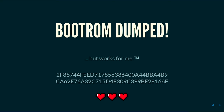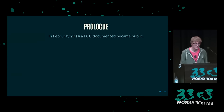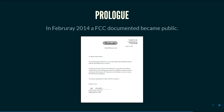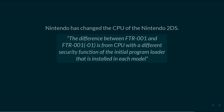Wir haben also den Bootrom — Nintendo verliert hier wieder ein Leben. Bevor wir uns den Bootrom nochmal ansehen, habe ich noch einen kleinen Prolog. In 2014 wurde ein FCC-Dokument öffentlich, das quasi sagt, dass Nintendo die CPU im Nintendo 2DS geändert hat. Das ist ein ganz interessanter Satz — er sagt einfach, die haben die Security-Funktion des Initialisierungsprogramms geändert, das in jedem Modell installiert ist. Der initiale ROM ist wahrscheinlich der Bootrom — offensichtlich muss da ein riesiger Bug drin sein.